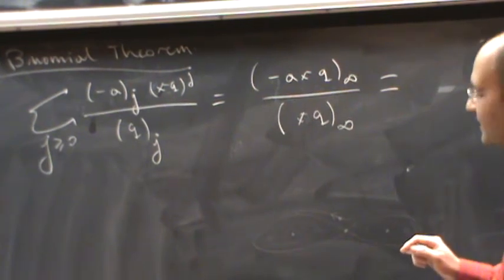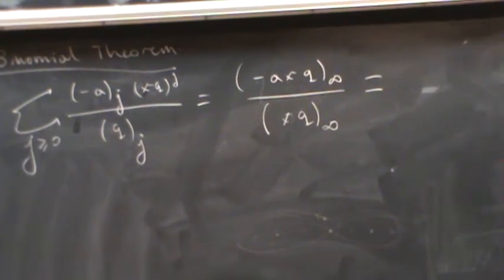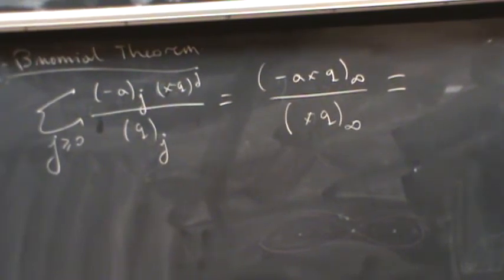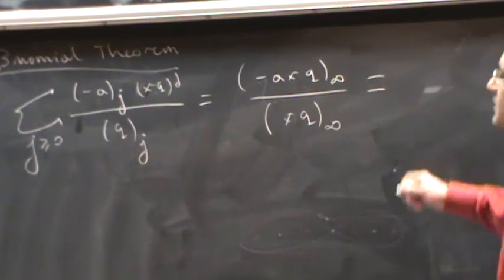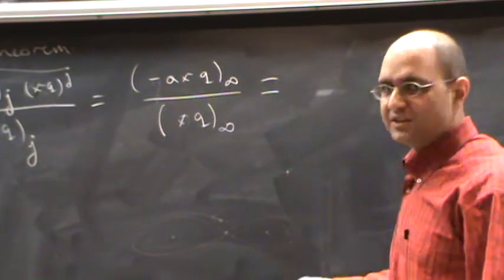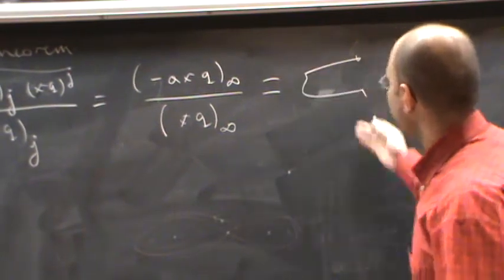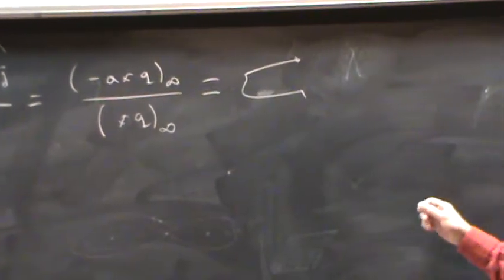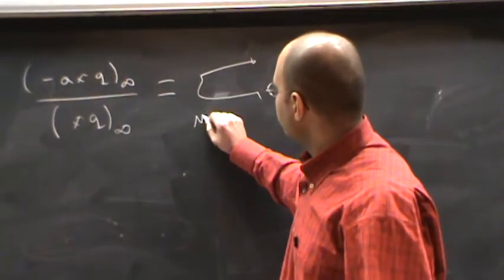That's equal to an infinite product. A series equals an infinite product minus a times x times q sub infinity divided by x times q sub infinity. There are many different proofs. In fact, there are unnecessary many proofs of this kind. But we are going to talk about a bijective proof today.